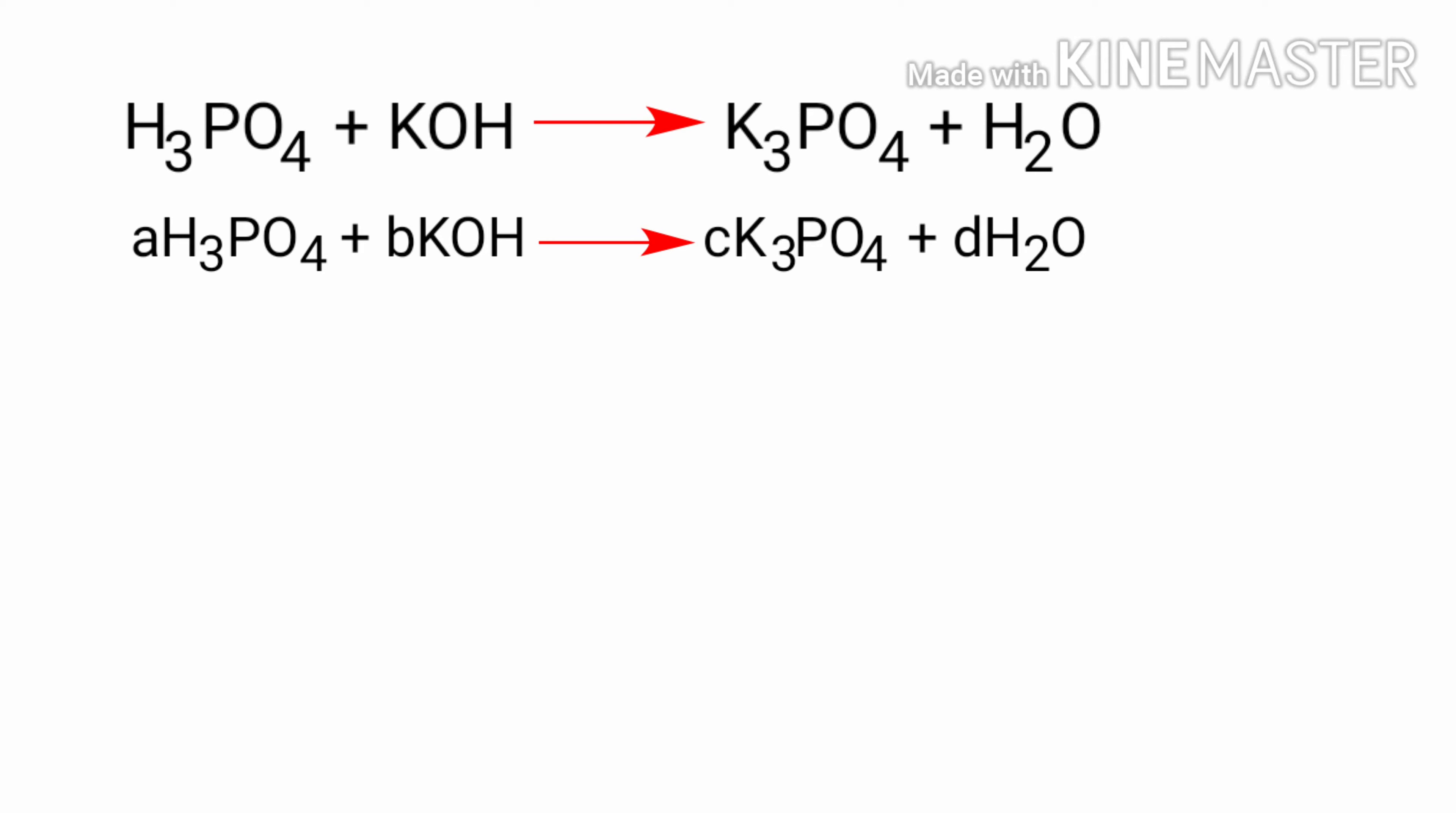Write algebraic rules for each element. For hydrogen, 3a plus b equals 2d. For phosphorus, a equals c. For oxygen, 4a plus b equals 4c plus d. For potassium, b equals 3c.